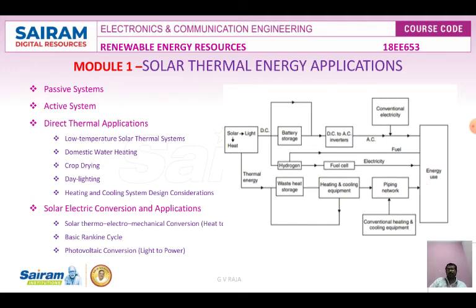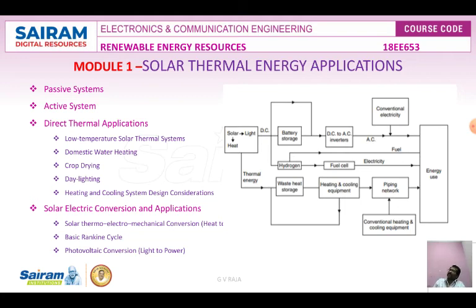There are two types of applications: direct thermal applications and solar electric conversion. In thermal applications, the heat of the Sun is used directly or solar radiation is converted into electricity. Thermal applications include low-temperature solar thermal systems, domestic water cooling systems, crop drying, daylighting systems, and heating and cooling systems. Solar electric conversion applications include thermoelectric and mechanical conversions, basic Rankine cycle, and photovoltaic conversions.